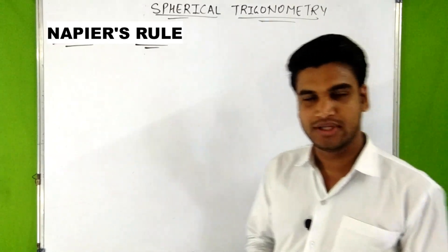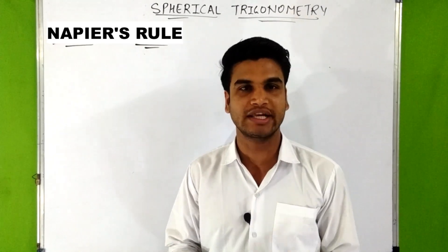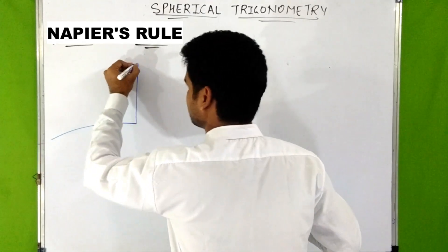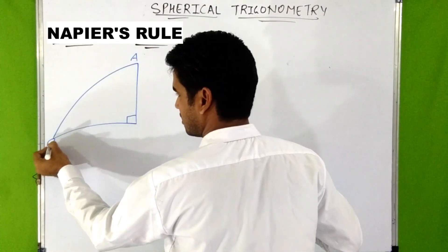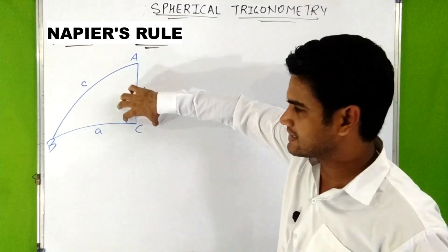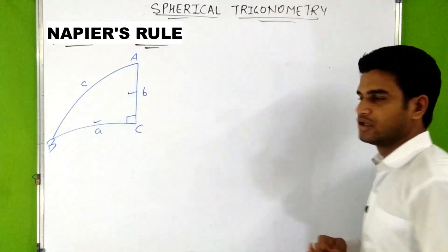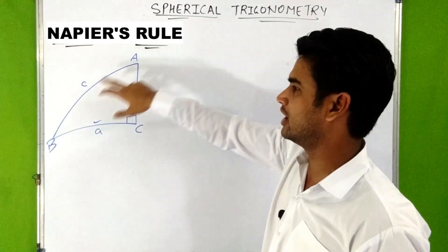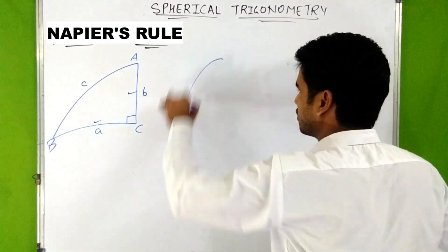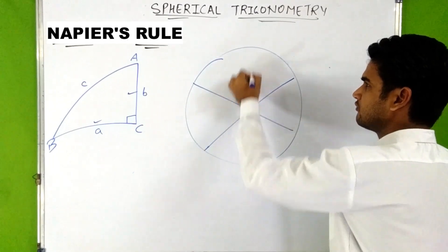In a right-angled spherical triangle, Napier's Rule is used when, apart from the angle which is equal to 90 degrees, two more elements are already given — they may be sides or angles. For example, in a right-angled spherical triangle right-angled at C with sides small a, small b, and small c, angle C is already given as 90 degrees and, for example, two sides are also given. We can use Napier's Rule to find the three unknown elements. To apply Napier's Rule, first we draw a circle and make five parts of it.